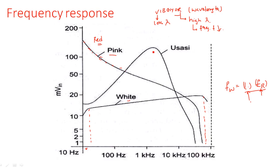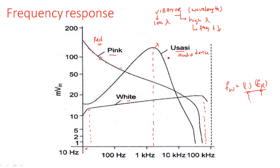The third noise type has maximum amplitude around 1 kilohertz. This type of noise, with maximum amplitude around 1 kilohertz, is generally preferred for audio devices and audio instruments. These are the different noises generated from this noise generator.